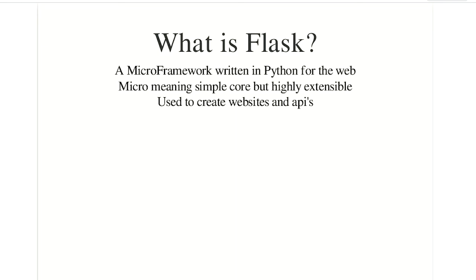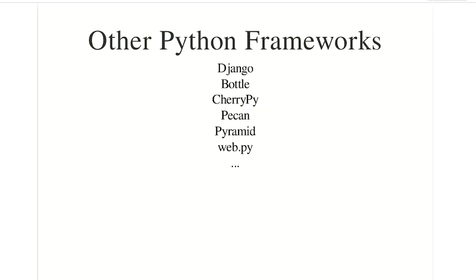In Python, there are many different frameworks. There are a few of them: Django, Bottle, CherryPy, Pecan, Pyramid, and Web.py. As we have already seen Flask, there is also a full stack framework. They all have different names. In Python there are many options, but the most popular choice is Flask and Django.